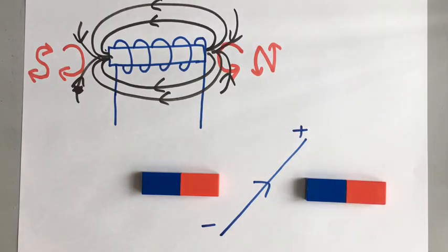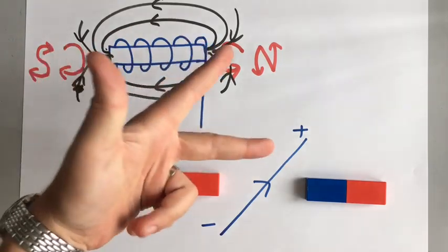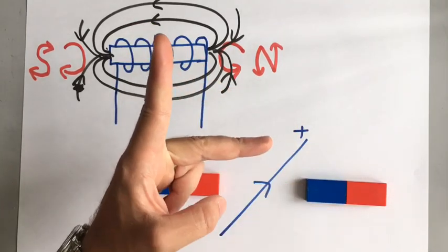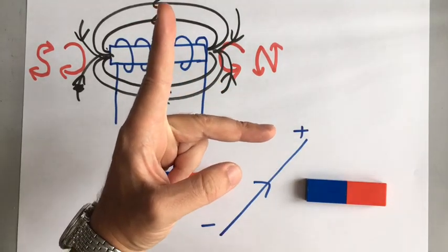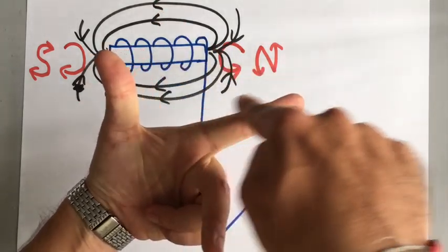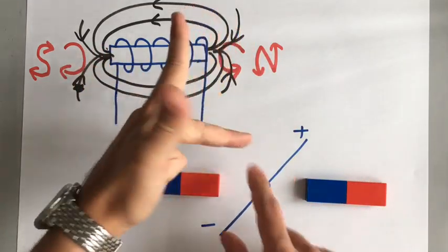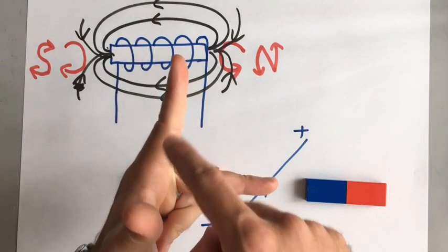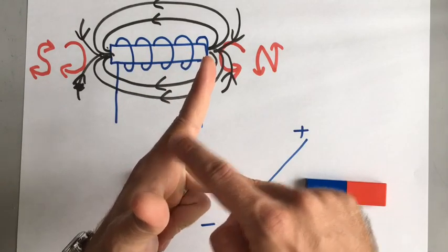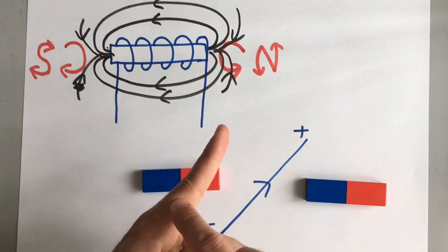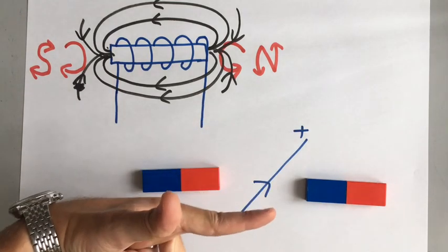We can work out what direction that force is in using a very simple rule called Fleming's left hand rule. To do it, you need your left hand and you need to make an L shape at 90 degrees with your first finger and your second finger, then point your thumb vertically upwards so your thumb and first finger make a right angle — you have this kind of shape. Each one of your fingers represents a different thing. Your first finger is the magnetic field — first finger field — so you point that from north to south.